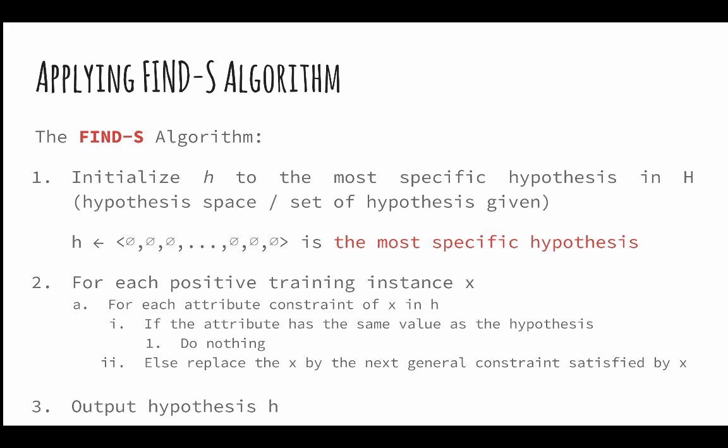In the Find-S algorithm, we first initialize a hypothesis H to be the most specific hypothesis represented by the same number of phi's as those of the number of attributes. Hence, in this example, we use six phi's listed as a tuple, one phi for each attribute. Then, for each positive training instance where the concept satisfies, we find out if a given attribute can be replaced. If the specific hypothesis H already contains the same attribute value, we don't have to do anything. If it does not, we replace it by a more general constraint, a question mark. We need to repeat this until all the hypotheses are considered. The resulting hypothesis H will be the output hypothesis.